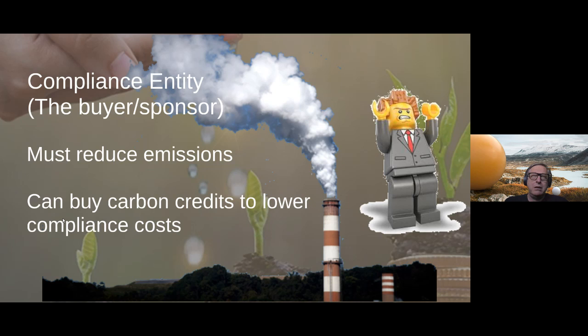The compliance entity or emitter is clearly another very important stakeholder. These are the organizations required by law to reduce emissions in Alberta, and they have various options to reduce those emissions — one of which is purchasing carbon credits to lower their compliance costs.